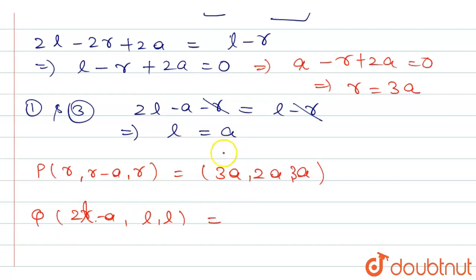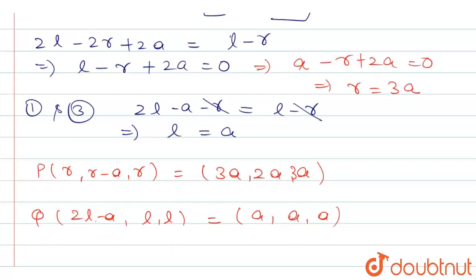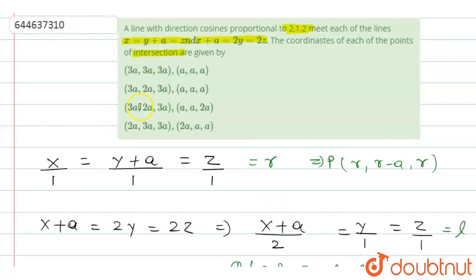Substituting l equals a into Q's coordinates: (2a − a, a, a) = (a, a, a). So the coordinates are P = (3a, 2a, 3a) and Q = (a, a, a). Comparing with the options, option B is the correct answer.